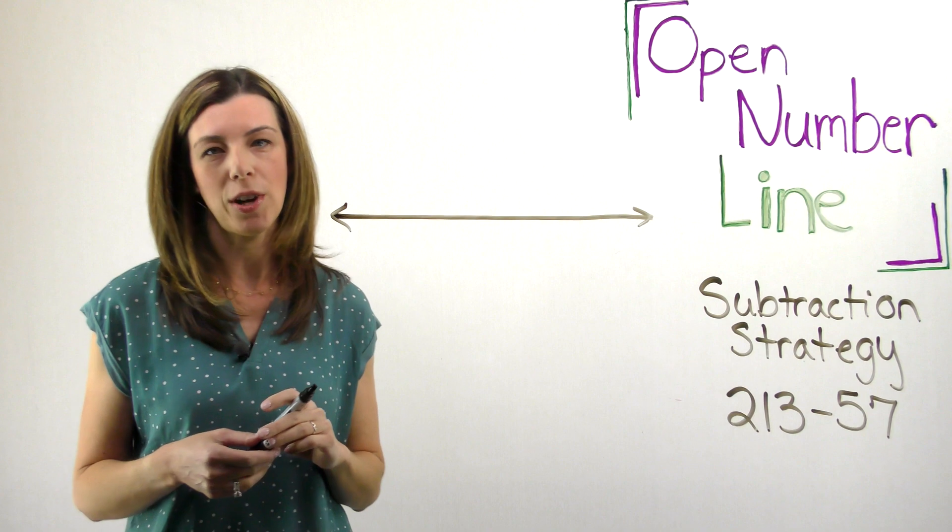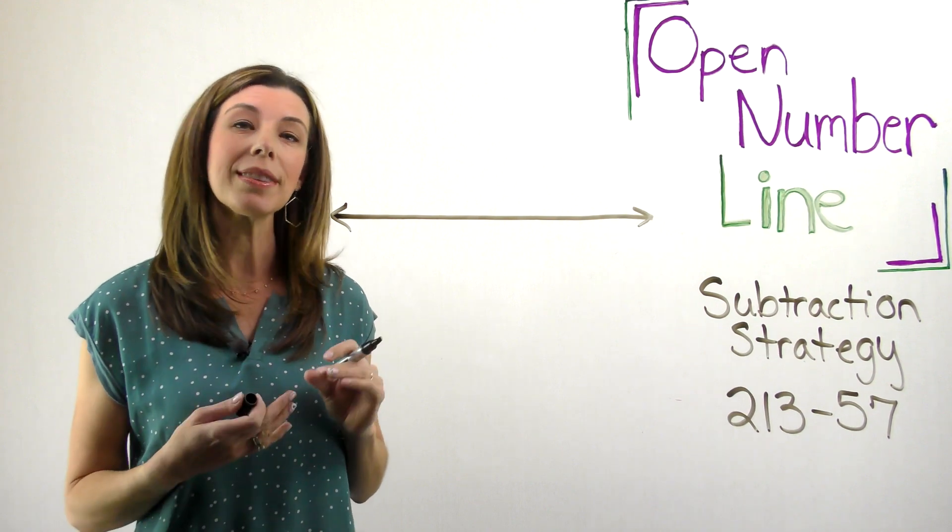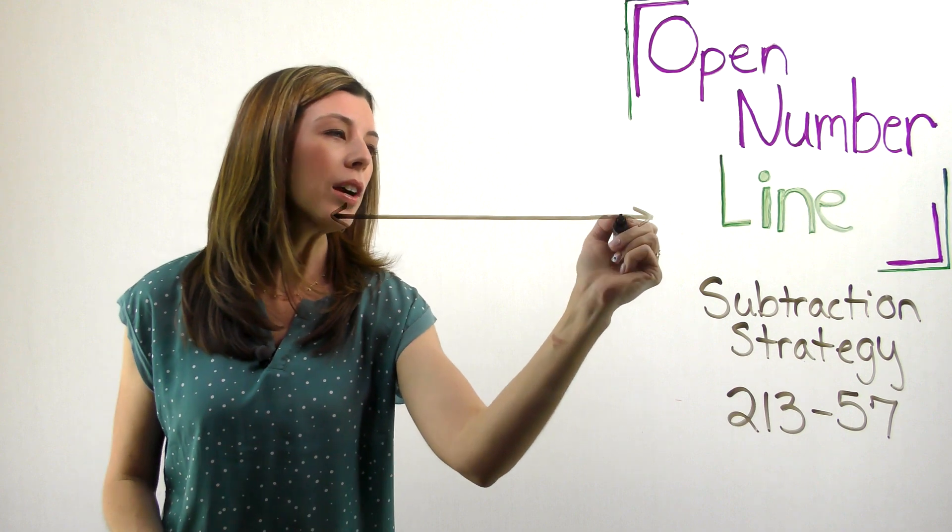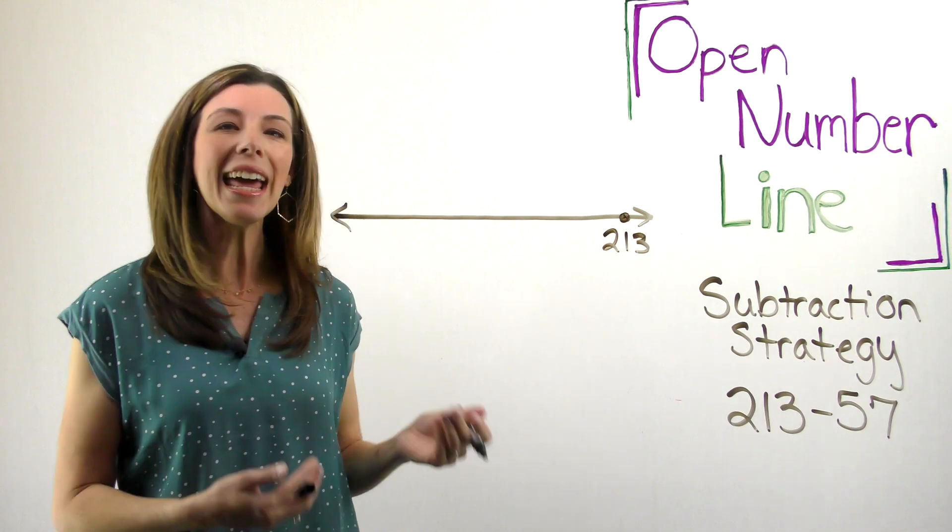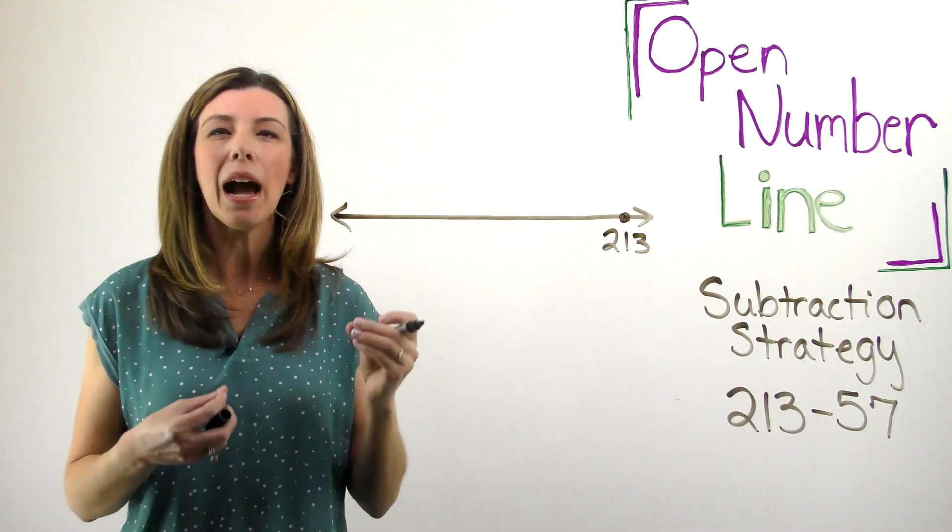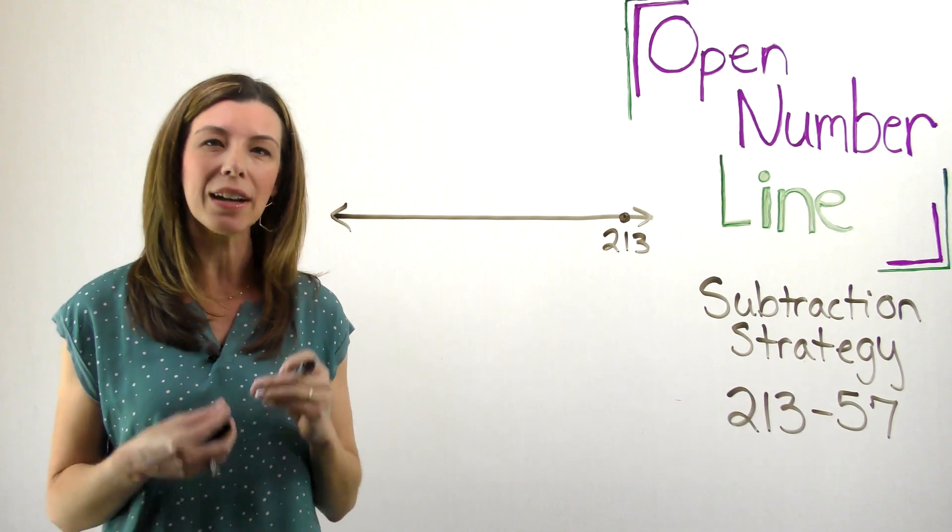With the open number line strategy, what I'm going to do is this time I'm going to start at the minuend. So I'm going to start over here at 213 and I need to subtract 57. So if you want to think of it this way, I'm going to be hopping back 57.